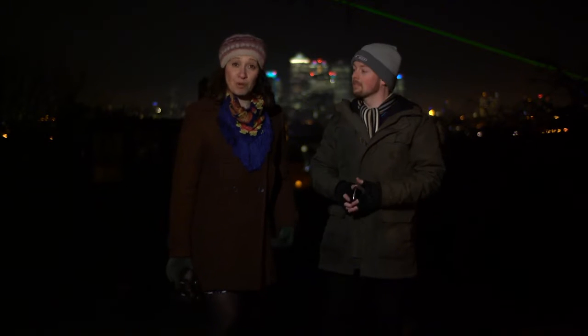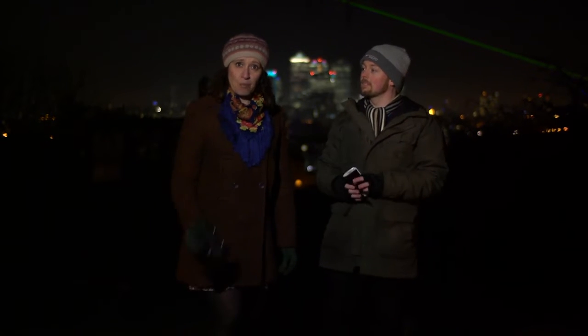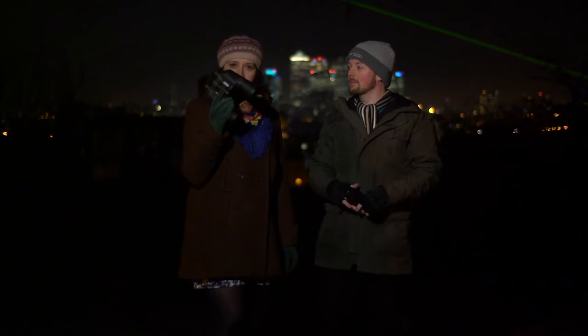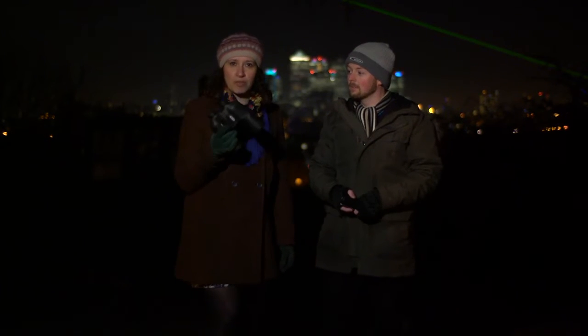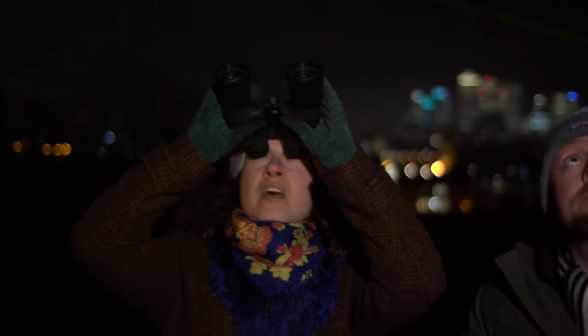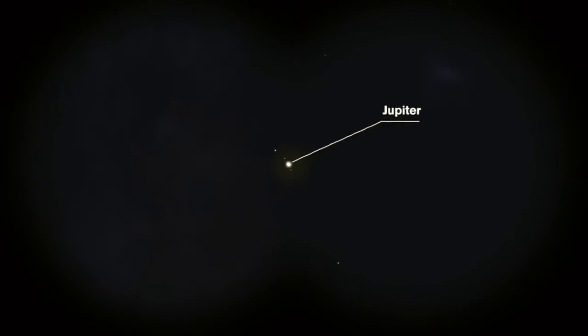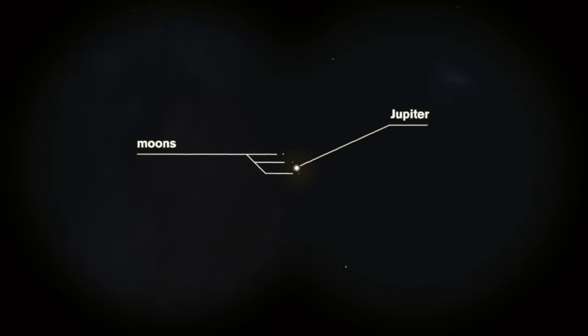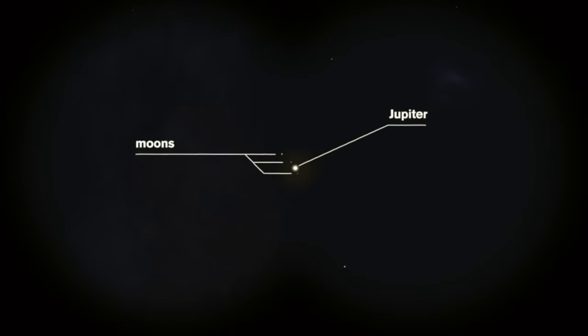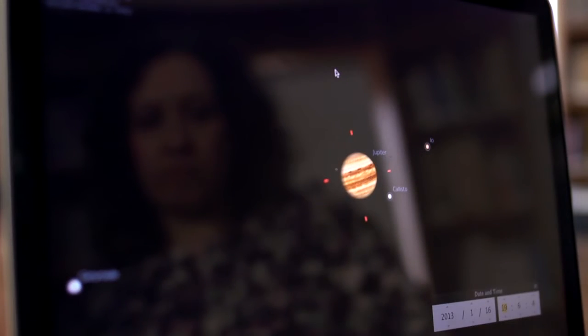If we want to see a bit more detail then we need a pair of binoculars. Taking a closer look at Jupiter through my binoculars, I can see the whole disk of the planet, and also I can see three of the four Galilean moons — exactly as we saw in Stellarium earlier.